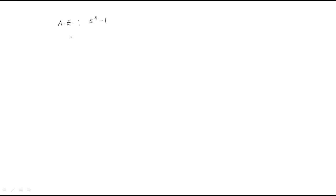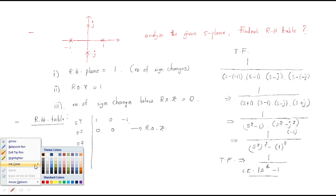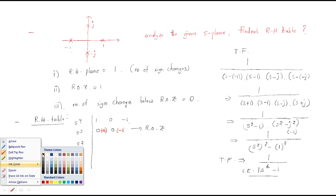By differentiating the auxiliary equation s⁴ − 1, we get 4s³. So we write 4 in place of the zero row for s³, and the next coefficient is 0. We place 4 and 0 in the zero row and proceed with the RH table calculation.